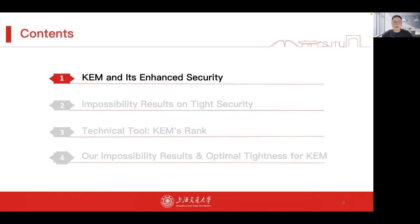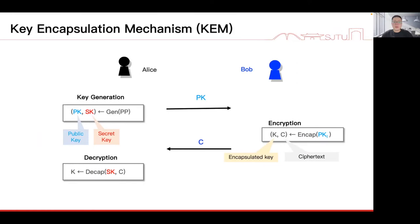Let us recall KEM. Key encapsulation mechanism, or KEM for short, is a public key cryptographic primitive. KEM has three probabilistic polynomial time algorithms. With the key generation algorithm, Alice generates a pair of public key and secret key, and publishes her public key PK. With Alice's public key PK, Bob can invoke the encapsulation algorithm to produce an encapsulated key and a ciphertext, and sends the ciphertext C to Alice. After receiving C, Alice can use her own secret key to decapsulate C and recover the encapsulated key K. This way, Alice and Bob establish a shared encapsulated key K and can use it for later use.